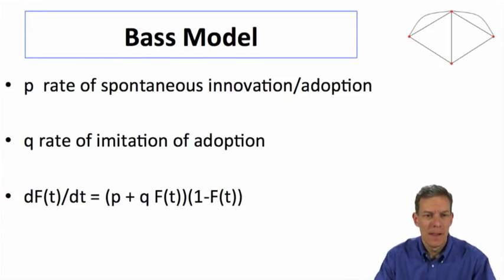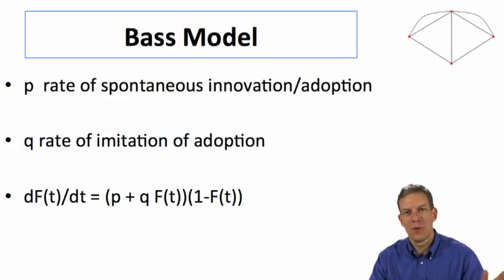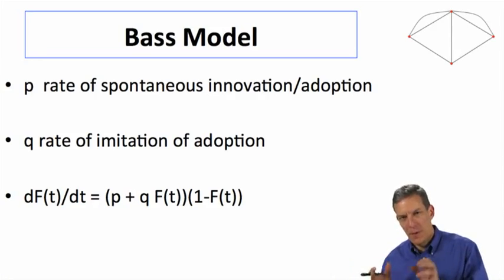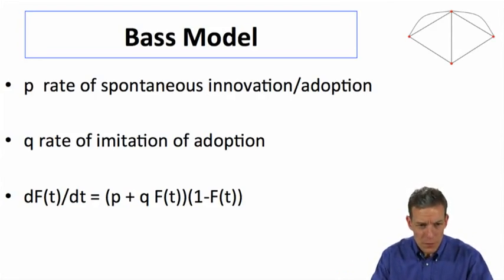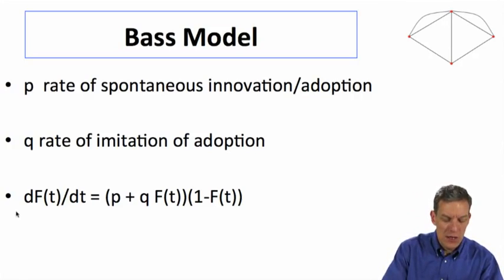Two key parameters in the Bass model. P is going to be a rate of spontaneous innovation or adoption. So that's going to be a rate that's independent of what else is going on in the economy or the world or the society. So some people will just go and decide to see a movie regardless of what's going on, or they'll adopt corn regardless of whether other people are doing it or they've heard about it. And there's some other individuals who will actually do it as a function of having heard about it or somehow imitated other individuals who are doing it. So there's these two parameters, p and q, and the Bass model basically boils down then to a simple equation which keeps track of the differential of the fraction of people who have adopted at time t as t varies. So how is this changing with time?